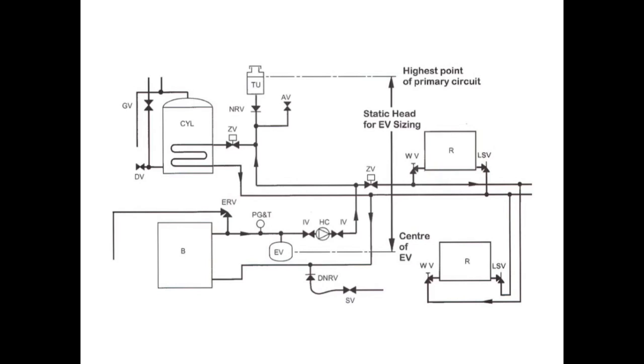Modern boilers and certain types of heat emitters do actually have a fairly high resistance to flow. This resistance, coupled with the resistance of the pipes and the fittings on a typical system such as the one you see on the diagram, form an overall system resistance.